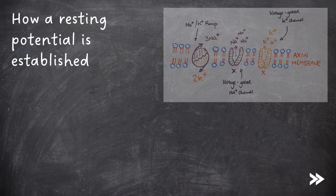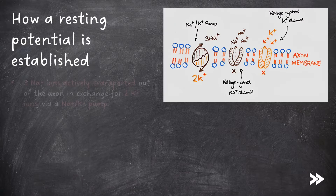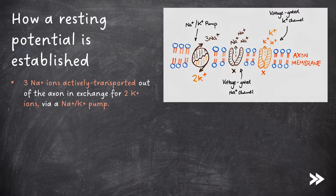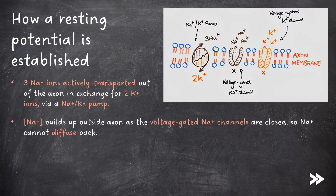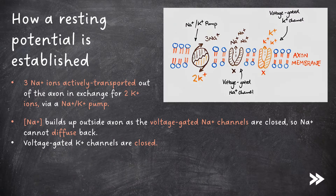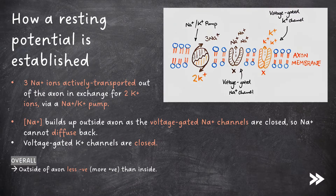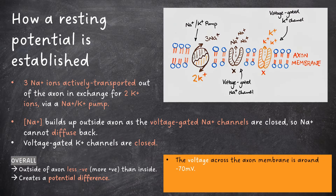So how is a resting potential established? First of all, three sodium ions are actively transported out of the axon in exchange for two potassium ions via a sodium-potassium pump. The concentration of sodium ions builds up outside the axon as the voltage-gated sodium ion channels are closed, so sodium ions cannot diffuse back. The voltage-gated potassium ion channels are also closed. Overall, the outside of the axon is less negative — or more positive — than inside. This creates a potential difference between the inside and outside of the axon. The voltage across the axon membrane is minus 70 millivolts, and this potential difference is known as the resting potential.